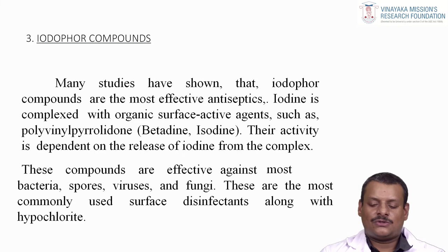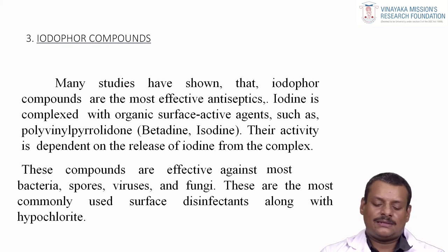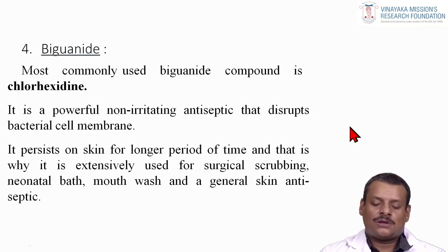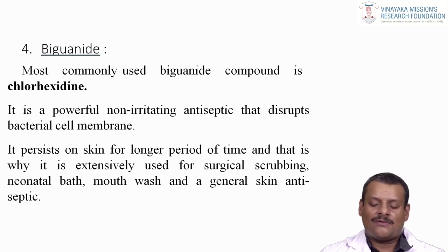Many studies have shown that iodophore compounds are more effective antiseptics. Iodine is complexed with organic surface-active agents such as polyvinylpyrrolidone — for example, betadine or isodine. Their activity depends on the release of iodine from the complex; these compounds are effective against most bacteria, spores, viruses and fungi, and are most commonly used as surface disinfectants along with sodium hypochlorite. The most commonly used biguanide compound is chlorhexidine, a powerful non-irritating antiseptic that disrupts the bacterial cell membrane. It persists on skin for a longer period and is extensively used for surgical scrubbing, neonatal baths, mouthwash, and as a general skin antiseptic.